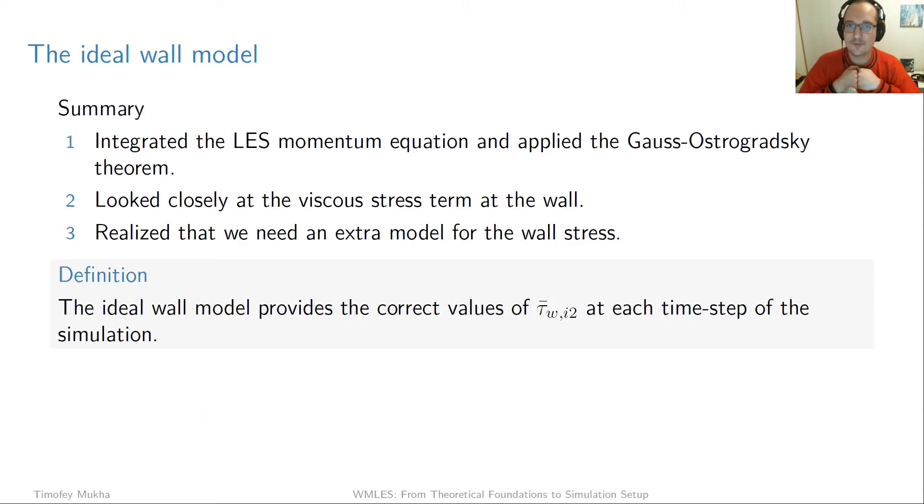All right, let's recap. So in this video, we first looked at the LES momentum equation, integrated it, and then applied the Gauss-Ostrogradsky theorem. Then we looked closely at the viscous stress term and its contribution at the wall. And when we did that, we realized that actually we need an extra model in order to compute that contribution, which is called the wall shear stress. So the final thing I want to say is just to reiterate what the ideal wall model does. And that is it provides the correct values of the components of a filtered wall shear stress at each time step for each wall face in the simulation.